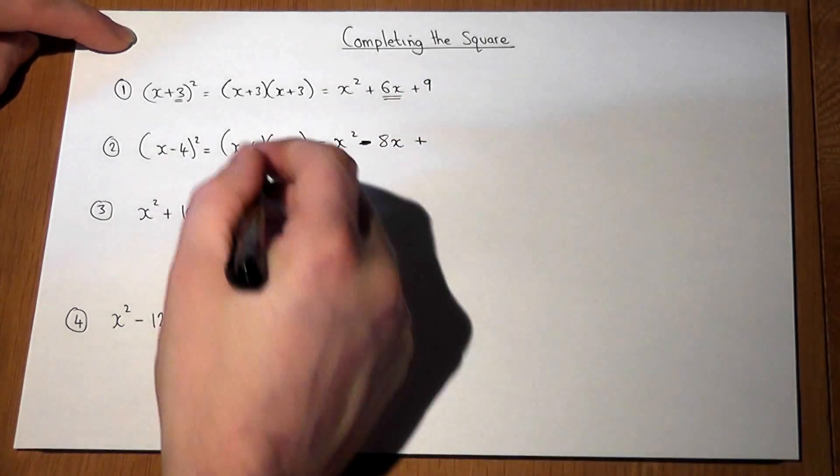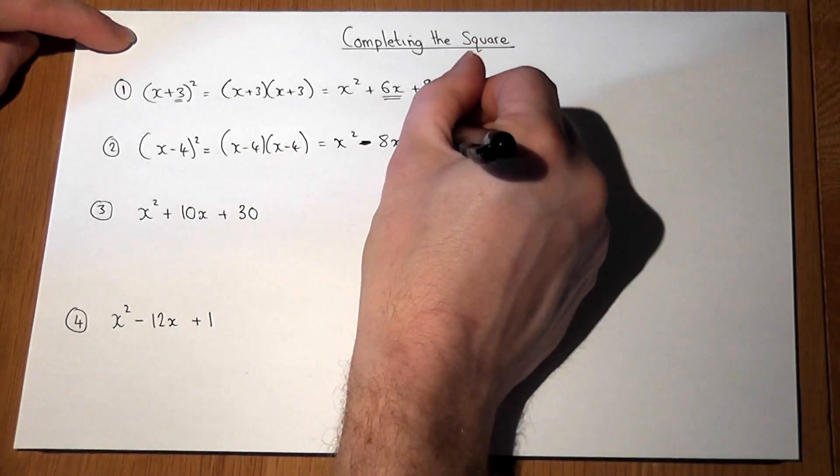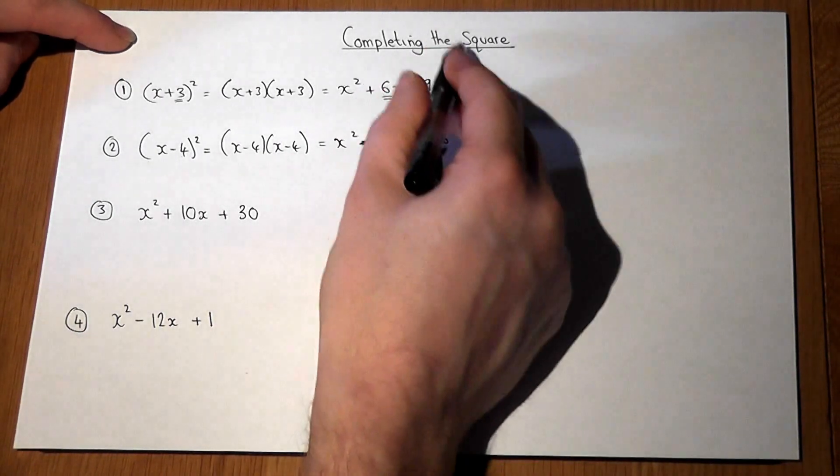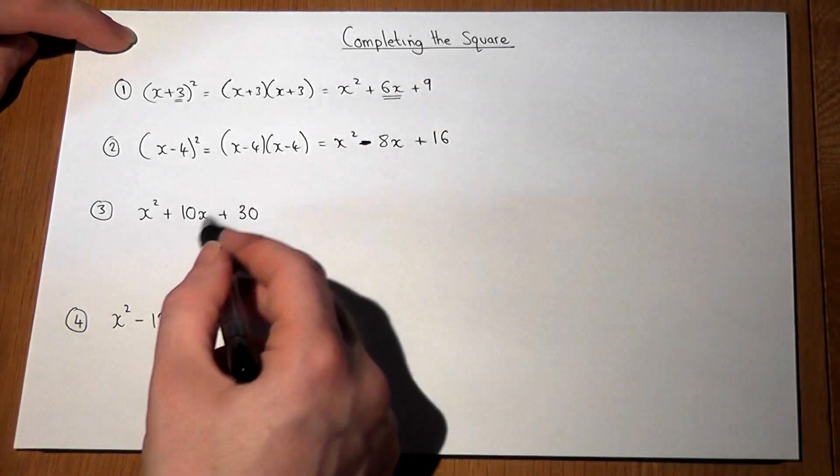And -4 times -4 is +16. Completing the square is almost going in reverse.